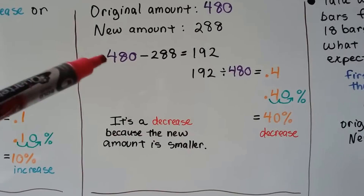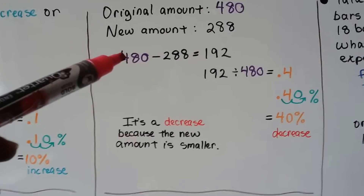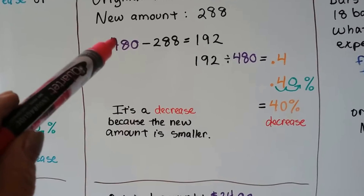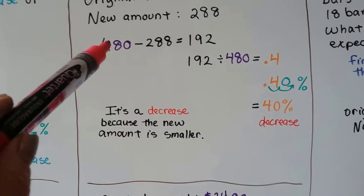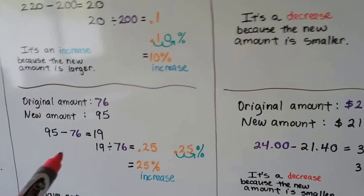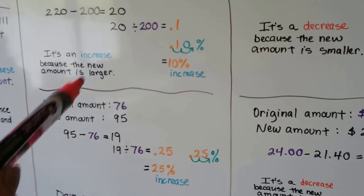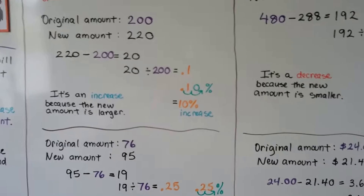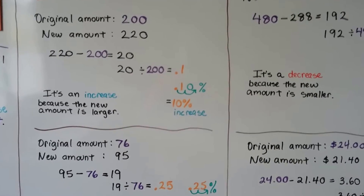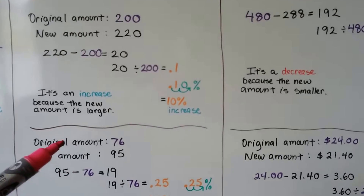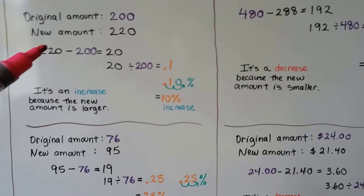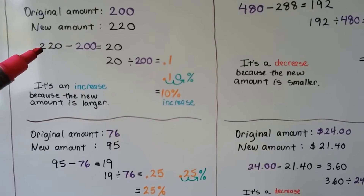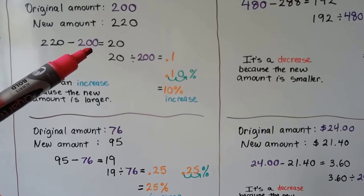Pay attention to where the original number appears: notice that it's in the front when subtracting in one case and in the back in others. That's because we don't want negative numbers, so we always put the larger number first as the minuend and use the smaller as the subtrahend.